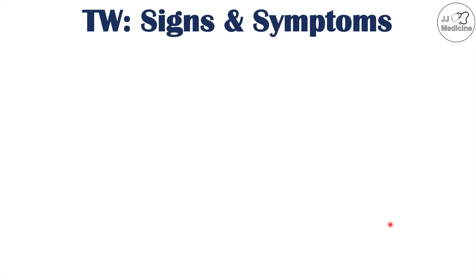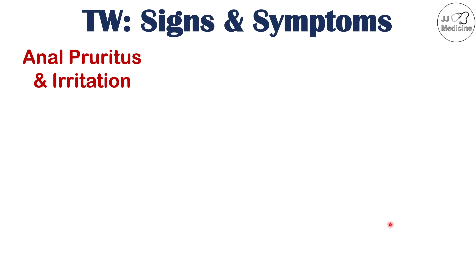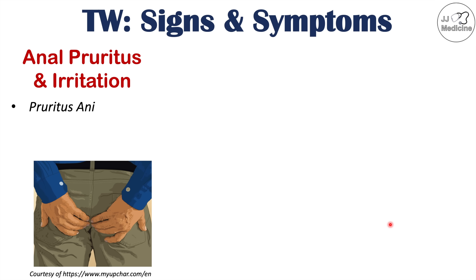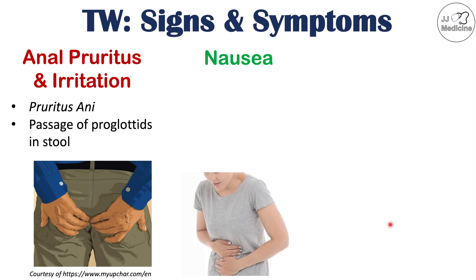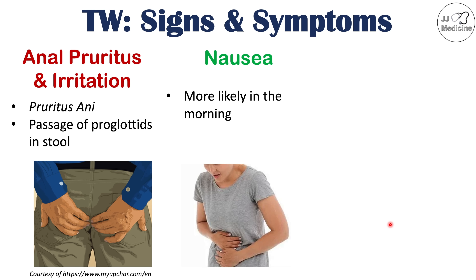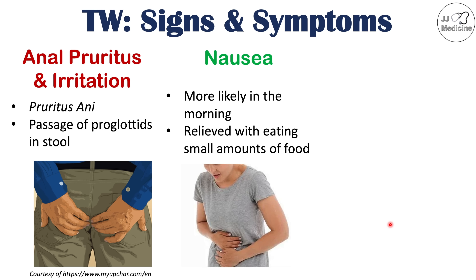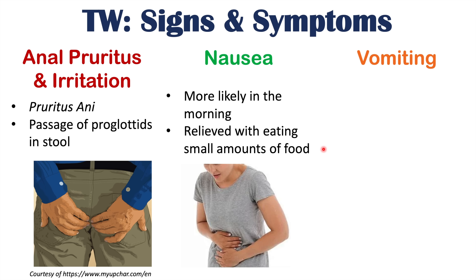Another important symptom is anal pruritus, or anal itching and irritation, which can be a cause of pruritus ani. It is due to the irritation and passage of proglottids in the stool. Patients can also have nausea, and interestingly, this nausea is also more likely to occur in the morning and may be relieved with eating small amounts of food. So both the abdominal pain and the nausea are more likely in the morning and could be relieved with eating — this may be important in recognizing a tapeworm infection.